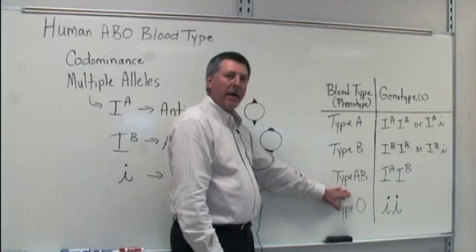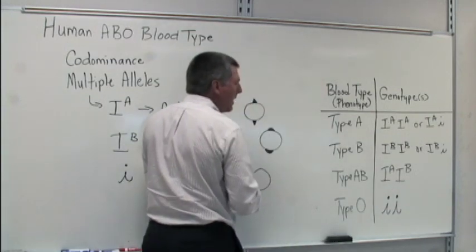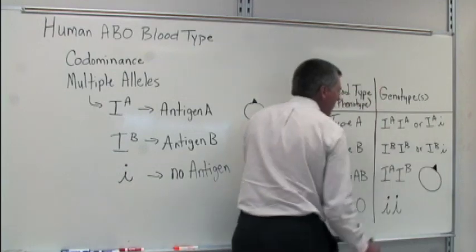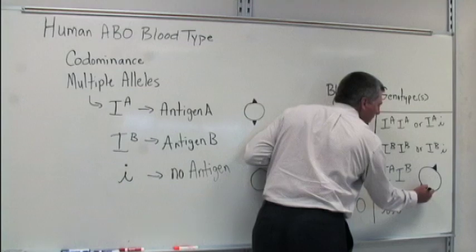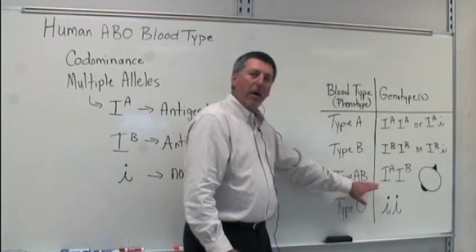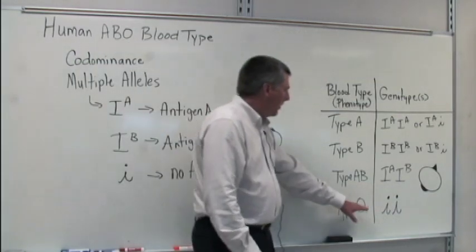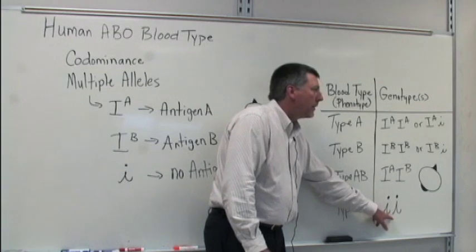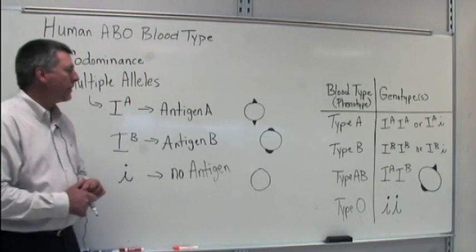Then there are folks that have type AB blood. In order to have type AB blood, one must have both the IA allele and the IB allele. The IA allele would cause the A antigen to be produced and displayed on the surface of the red blood cell membrane, so they have both antigens on their red blood cells. Then we have the type O blood type, and the only possible way to get type O blood is to be homozygous little i. Little i, little i results in type O blood, and those blood cells have no antigens displayed on the surface of their membranes.